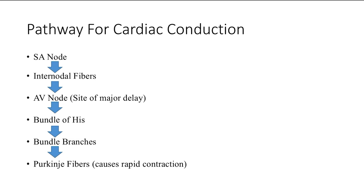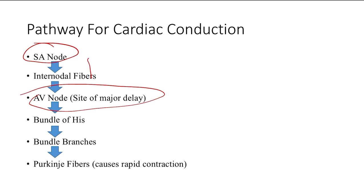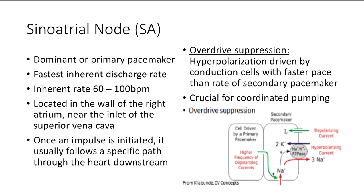A quick review of the pathway for cardiac conduction, or the propagation of the cardiac action potential. Normally it will start in the SA node — the sinoatrial node — which is a collection of conductive cells located in the right atrium. They'll propagate down through the internodal fibers, which connect the SA node to the AV node, then to the AV node, which is the site of major delay. Then the bundle of His, the bundle branches, and the Purkinje fibers, which are embedded within the ventricles.